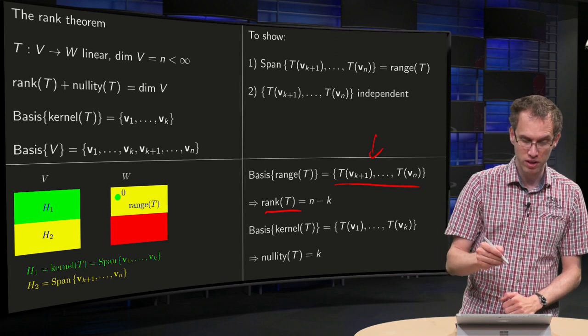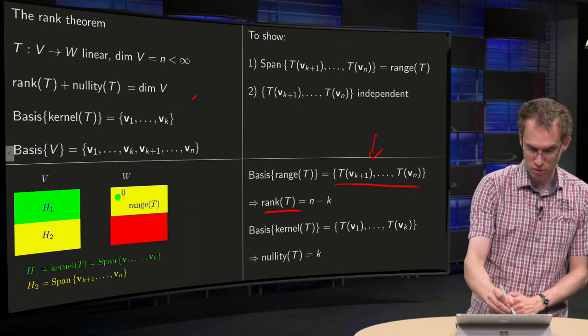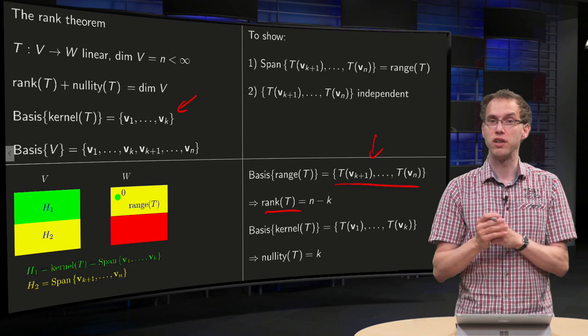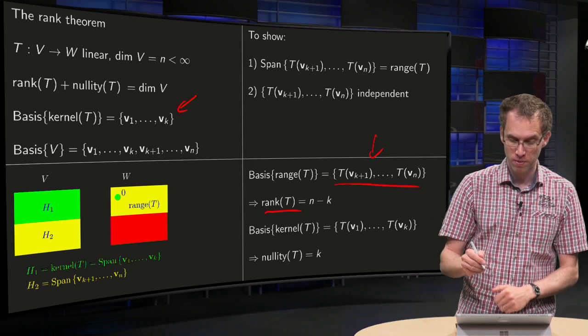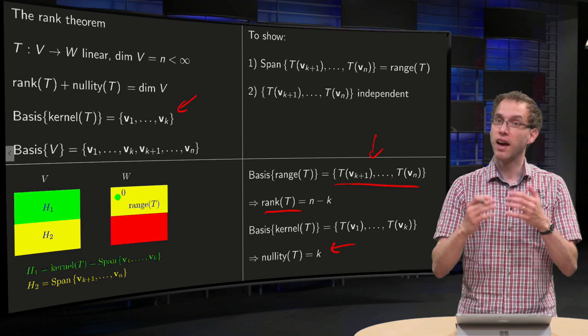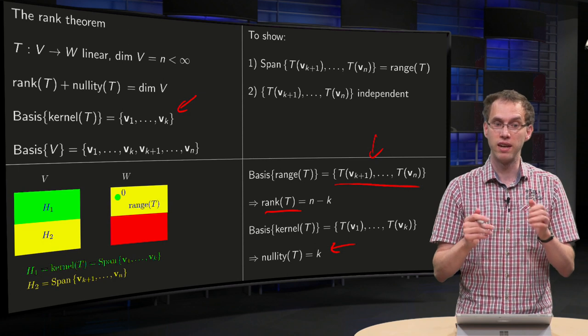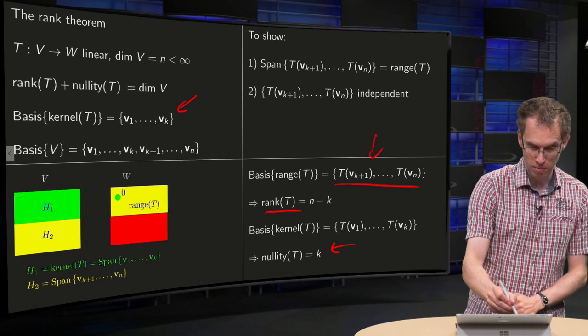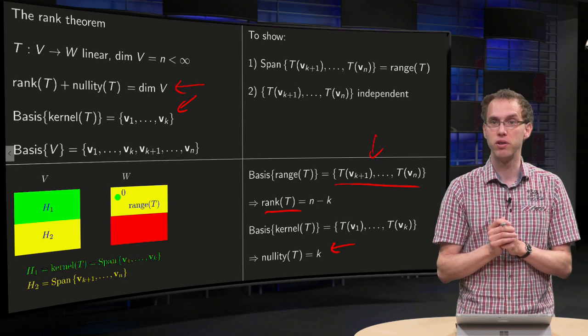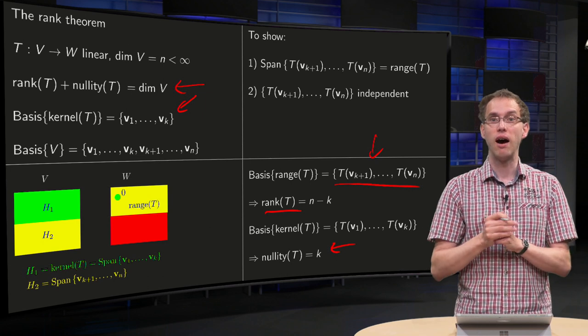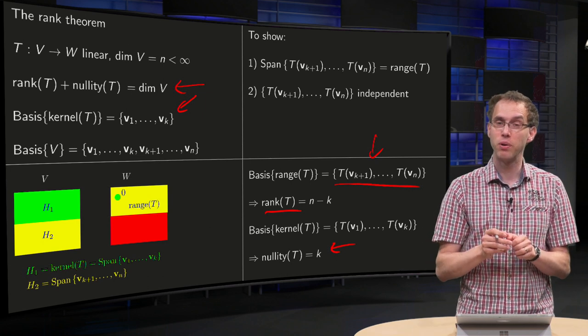You know, of course, the nullity, because the basis of the kernel over here is the set v1 up to vk, so the nullity of T will be k. And then you see, if you add those two together, you get n minus k plus k equals n. So, that's the theorem, rank of T plus nullity of T equals the dimension of V. This is the outline of the proof and the idea why it works.